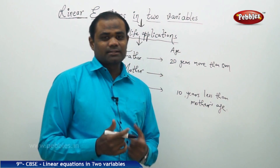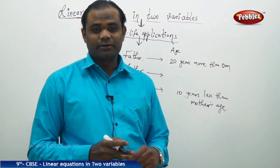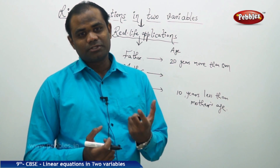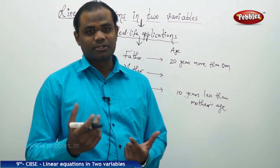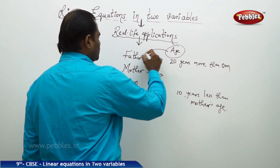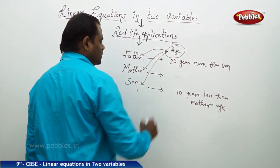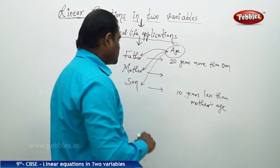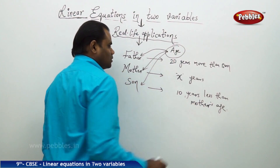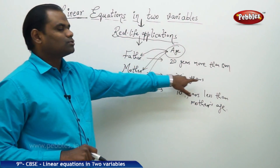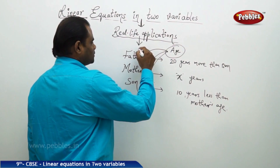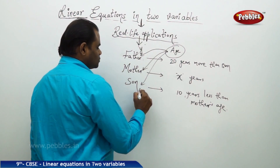When we want to connect real life situations into linear equations, we try to express the given conditions in the form of variables x and y. Here, since it is about the ages of father, mother, and son, we represent the age of mother as x, the age of father as y, and the age of son as z.